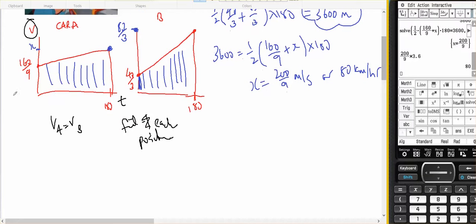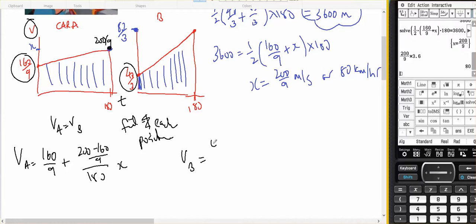Now, I know that that's my y-intercept, so V of A should equal 160 on 9, plus rise over run. I know that is 200 on 9, so 200 minus 160 on 9 on 180, X, and V of B should be 40 on 3, plus its gradient will be 80 on 3 minus 40 on 3. So 80 minus 40 on 3, on 180, X.